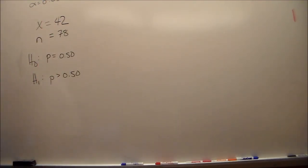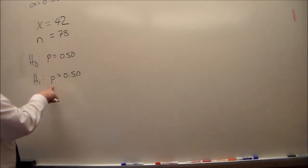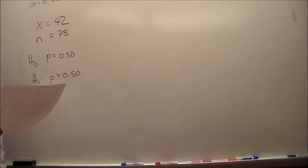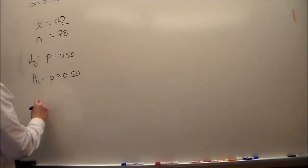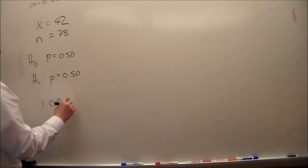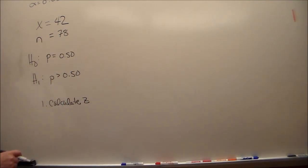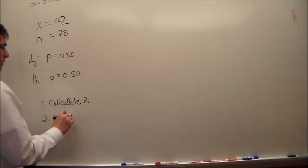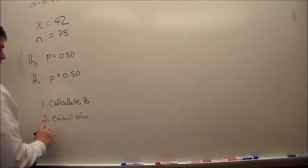Now we know this is a one-sample proportions test. This is a proportions test because we're dealing with p, proportions. The first thing we're supposed to do is to use the critical value method to test the hypothesis. That means we have to do two things: one, calculate the test statistic, and since this is a proportions test, that test statistic is z. Two, determine the critical value. And then three, compare.